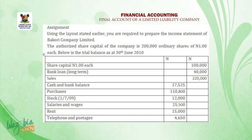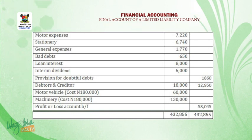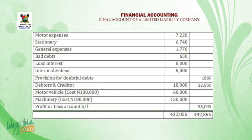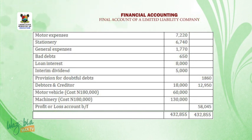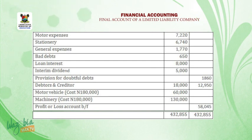Continuing the trial balance debit items: telephone and postages — 4,650; motor expenses — 7,220; stationeries — 6,740; general expenses — 1,770; bad debts — 650; loan interest — 8,000; interim dividend — 5,000. Credit column: provision for doubtful debts — 1,860. Debit column: debtors — 18,000. Credit column: creditors — 12,950. Motor vehicle at cost 180,000 — take 60,000 to debit column. Machinery at cost 180,000 — take 130,000 to debit column. Profit or loss account balance brought forward — 58,045 to credit column.